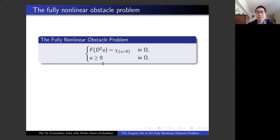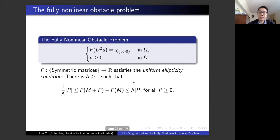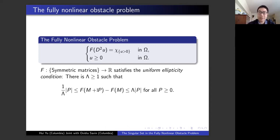For applications in game theory and finance, you need to study the obstacle problem with such operators. Generalizing a bit, the problem is almost the same but instead of the Laplacian, we have a general function F applied to the Hessian. F maps the space of symmetric matrices to real numbers. For the theory to work, it has to be elliptic: if I start from a general matrix M and move in a positive direction P, my function has to increase, and the amount of increase is proportional to the distance moved. This is the ellipticity condition for a fully nonlinear operator.